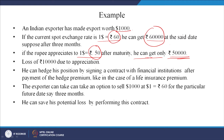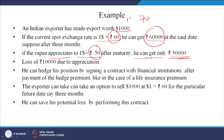As an exporter, if the rupee appreciates you will never like it - you would prefer the rupee to depreciate. Had it depreciated to say 70 rupees per dollar, this exporter would have got 70,000 rupees. So the loss is 10,000 rupees due to appreciation - the difference between 60,000 and 50,000.